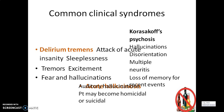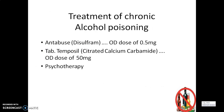Additionally, tremors, psychosis, hallucinations, disorientation, multiple neuritis, and loss of memory for recent events can be observed as a syndrome of chronic alcohol poisoning.